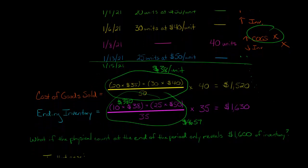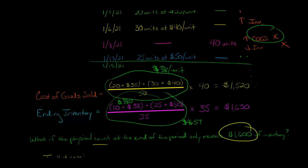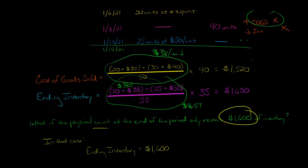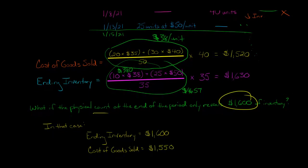What if the company were to do a physical count of the inventory and found they actually only have $1,600 of inventory on hand at the end of the period? We just calculated based on the average cost method that ending inventory was $1,630. If we counted and there's actually less inventory on hand, we've got an issue — we're going to have to make an adjusting journal entry. We could debit cost of goods sold for $30 and credit inventory for $30. Some companies, instead of debiting cost of goods sold, would debit something like 'other expense — inventory shortage,' in case some inventory was stolen.